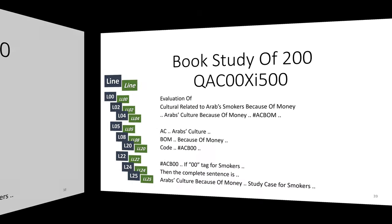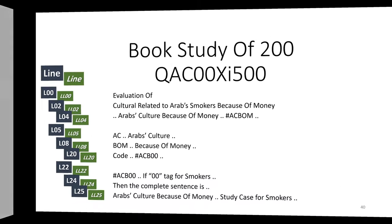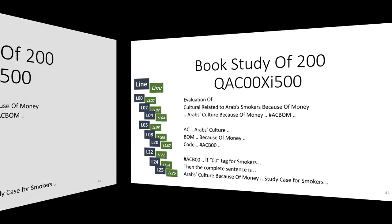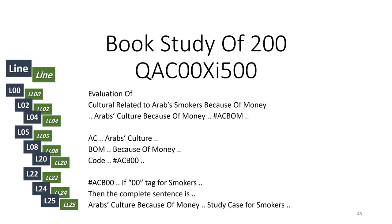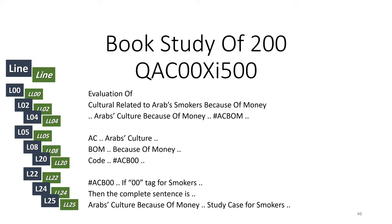The last block starts with 22, 24, 25 — so the last line is 25. The last word is 25, which is Arab culture, because Arab culture is one word. So the first block starts with the word Evaluation, the second block starts with the word Arab culture, and ends with code. The third block starts with the code ACB00, and ends with Arab culture.